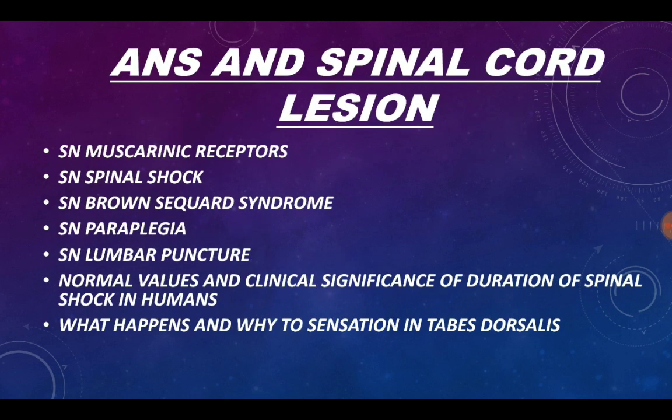Moving on to the autonomic nervous system and spinal cord lesion: short note on muscarinic receptor is not that important; short note on spinal shock is important; short note on Brown-Séquard syndrome is also important; short note on paraplegia is not that important; short note on lumbar puncture and normal values and clinical significance of duration of spinal shock in humans are also not important. What happens and why to sensation in tabes dorsalis is very important.